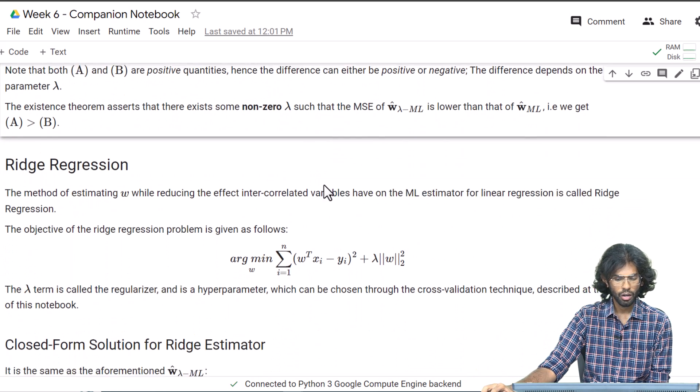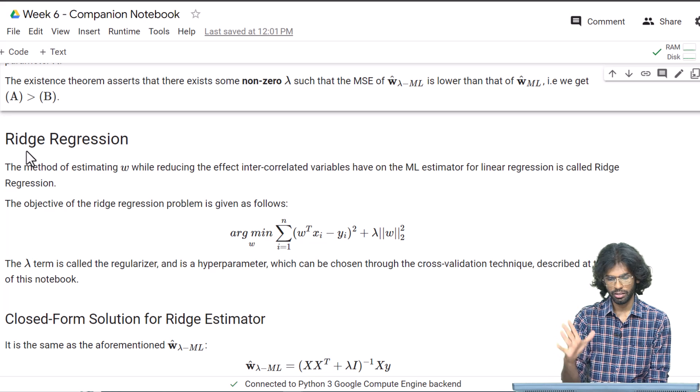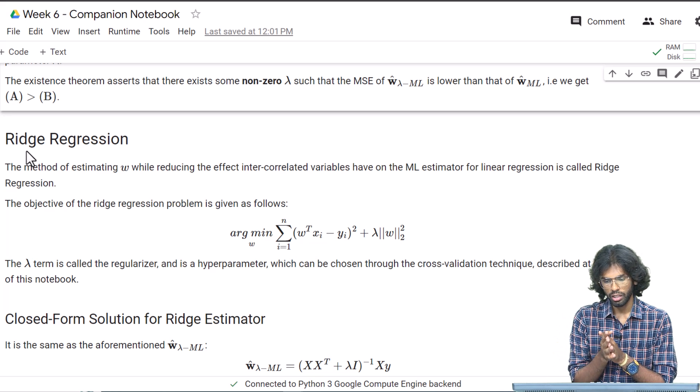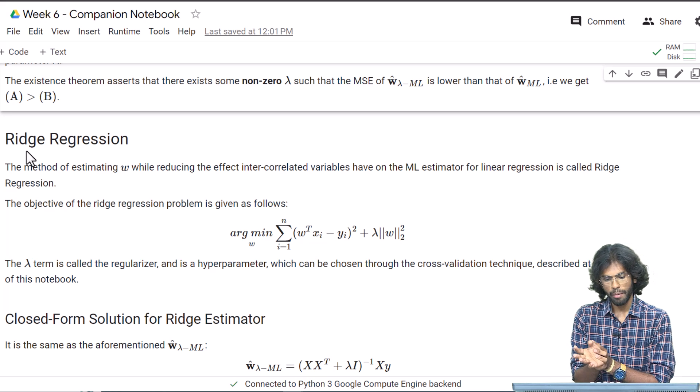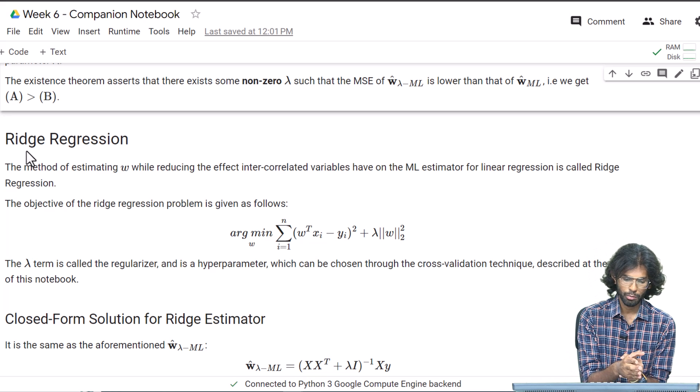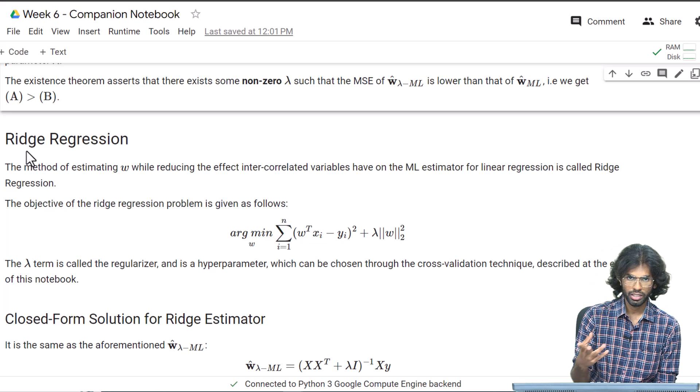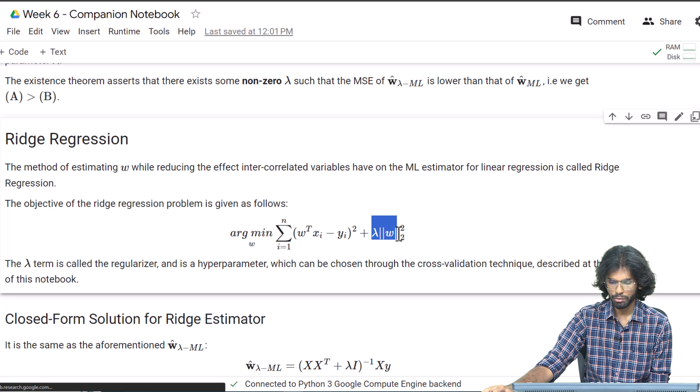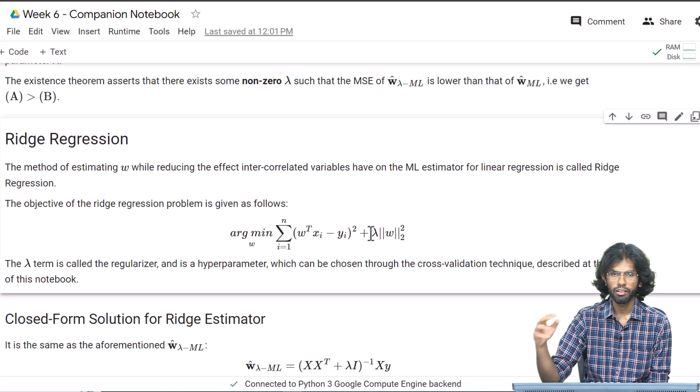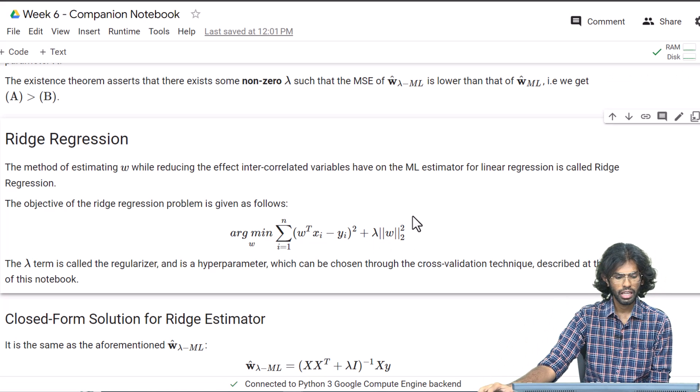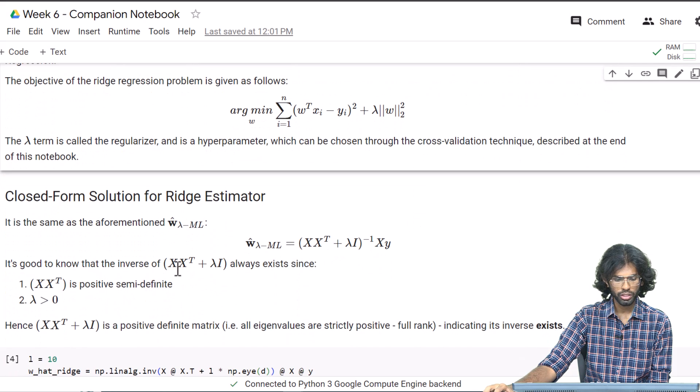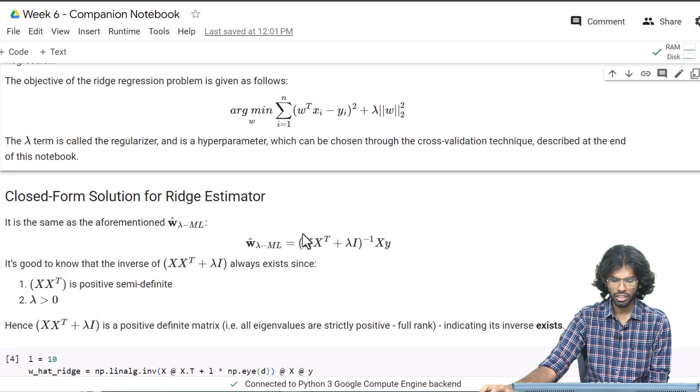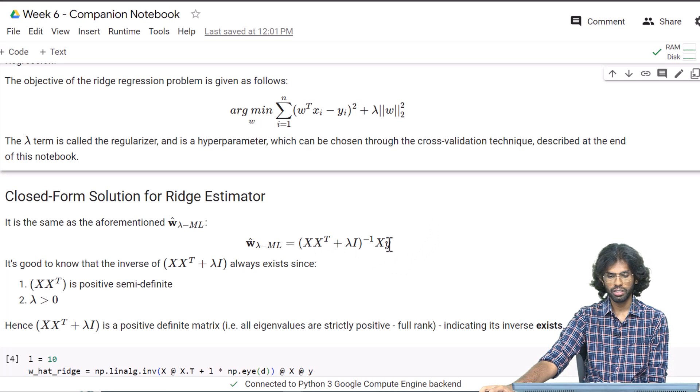Given this formulation, we formulate a ridge regression problem as follows. The estimator that we found happens to be the solution of this optimization problem, which is similar to the ordinary least squares optimization problem but with this extra λ times norm-squared parameter. This is our new regression problem, and the closed-form solution is, correspondingly, the same (XX^T + λI)^-1 XY formula.